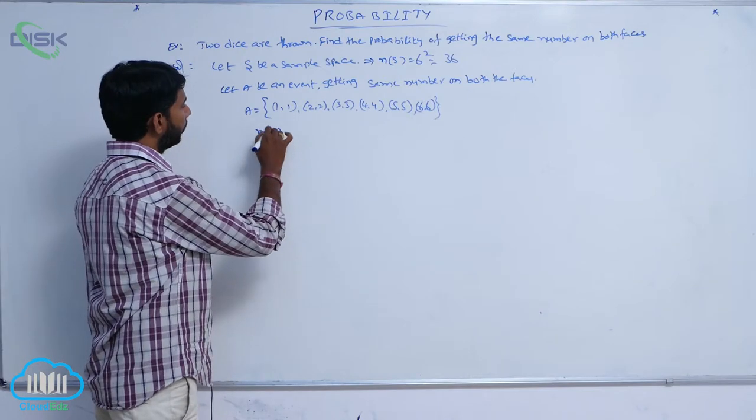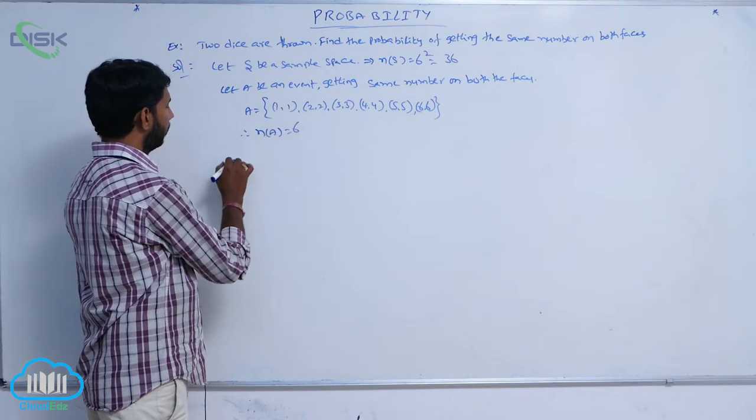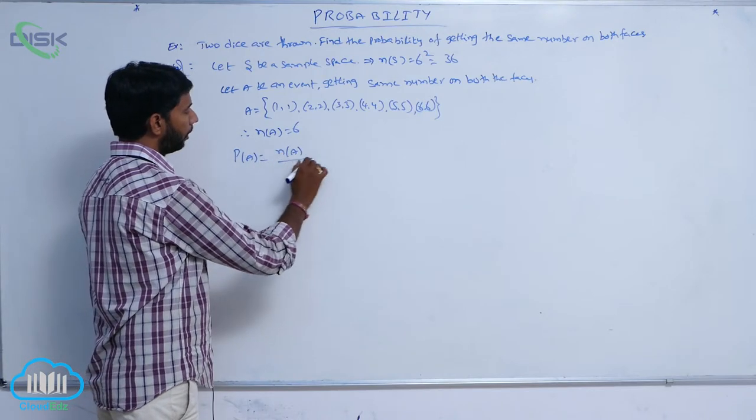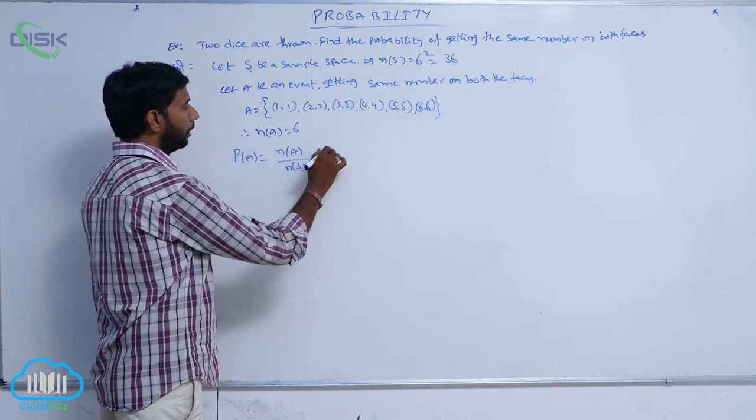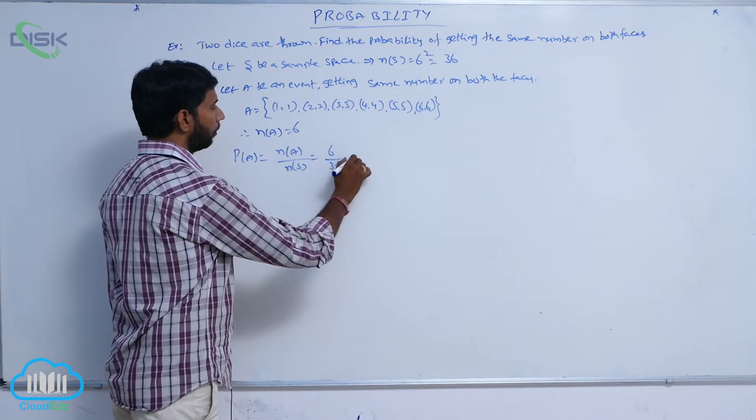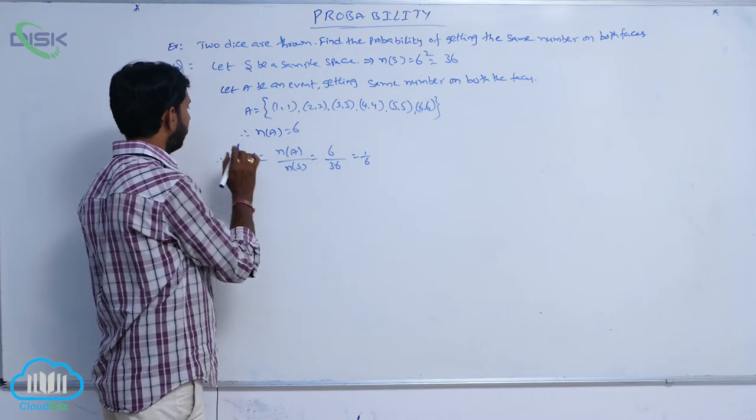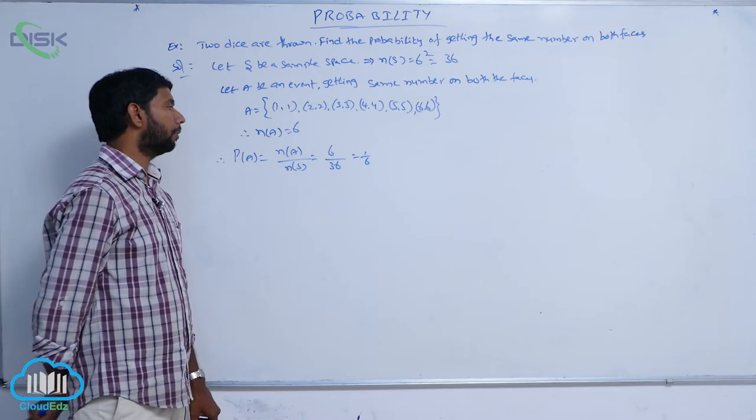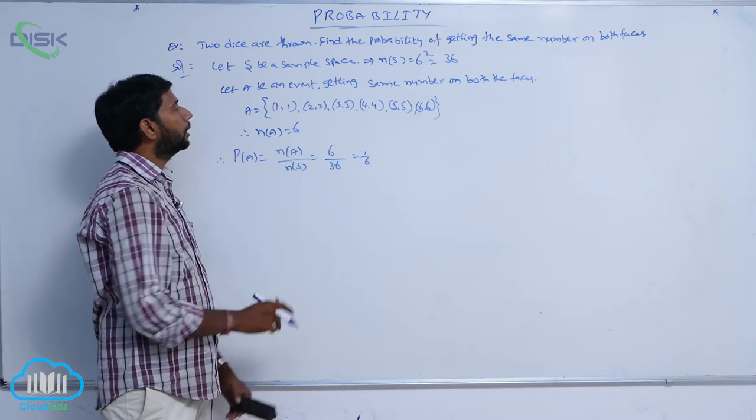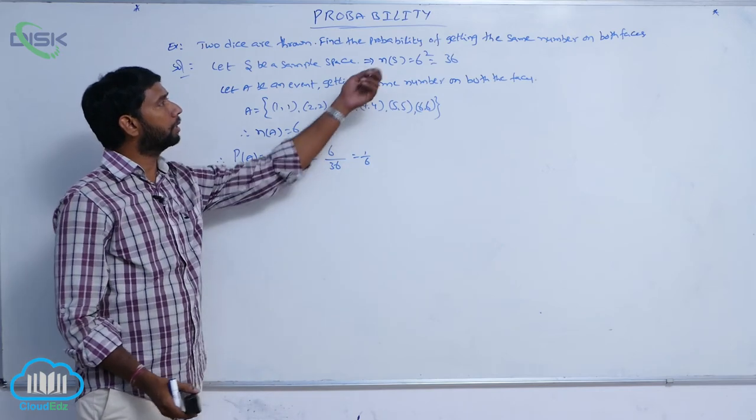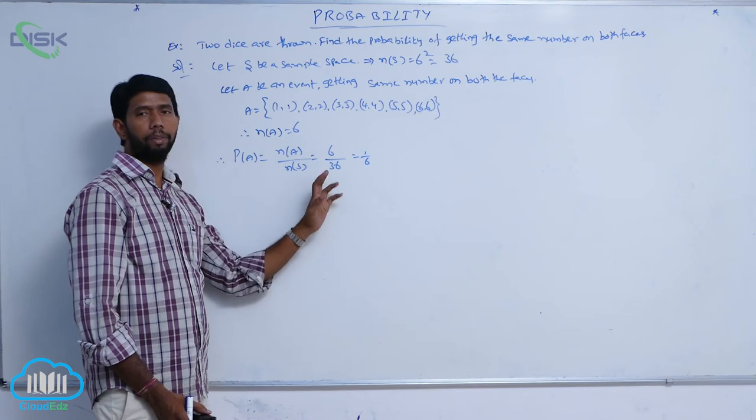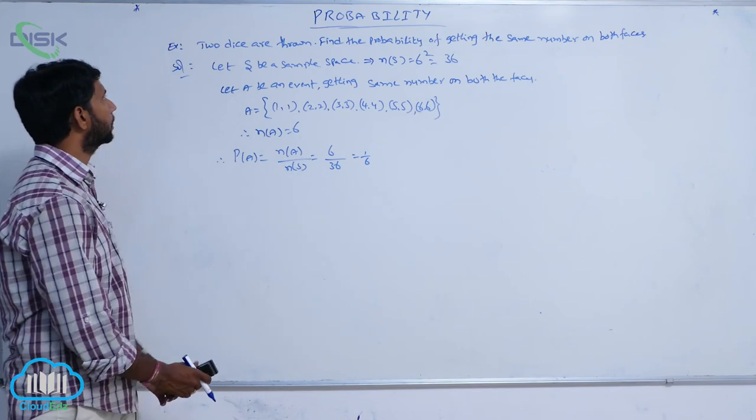N of A is equal to 6. Therefore, the required probability P of A is equal to N of A by N of S, that is 6 by 36, which equals 1 by 6. Probability means the number of favorable cases by the total number of cases. Here favorable cases are 6 and the total number of chances are 36.